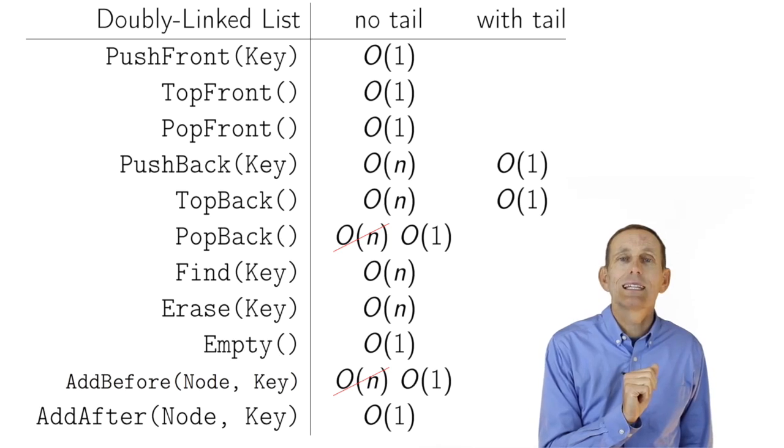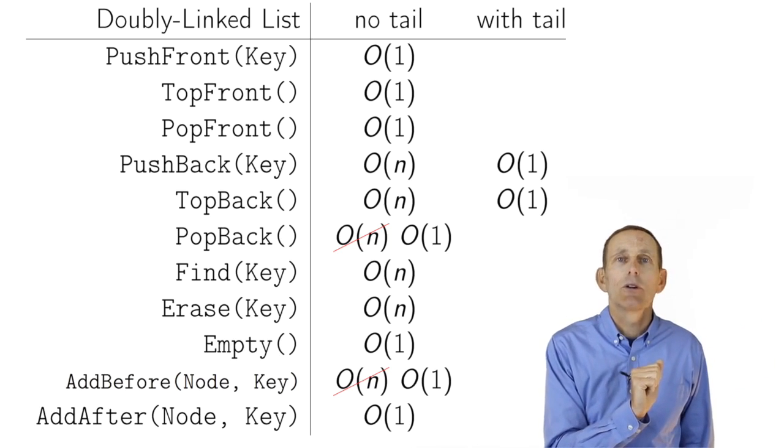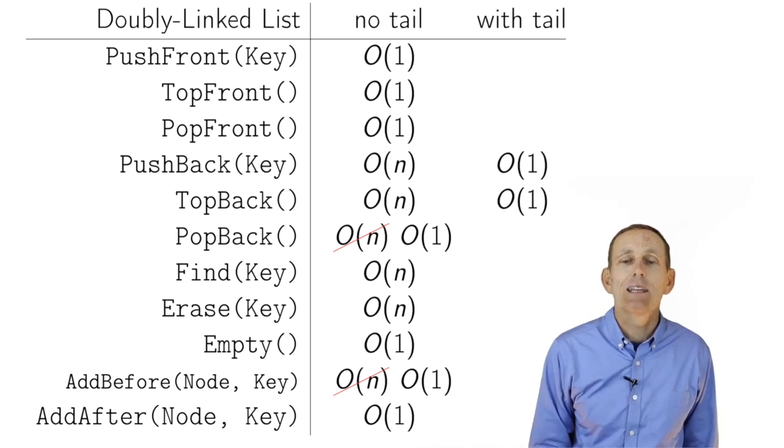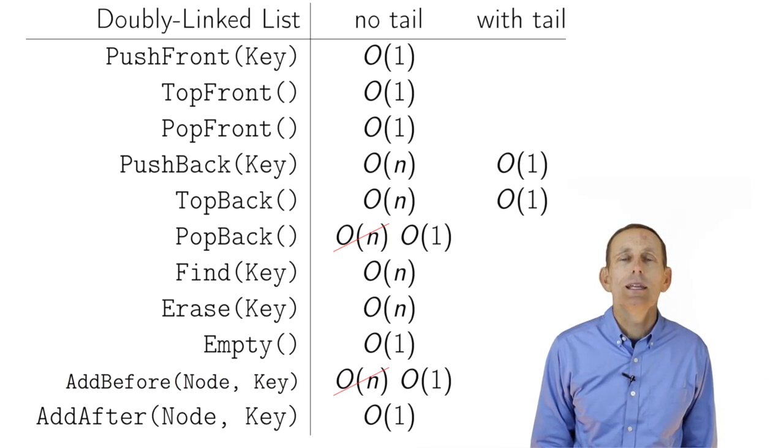By switching to a doubly linked list, removing from the end, popping back, becomes now an order one operation, as does adding before, which used to be a linear time operation.